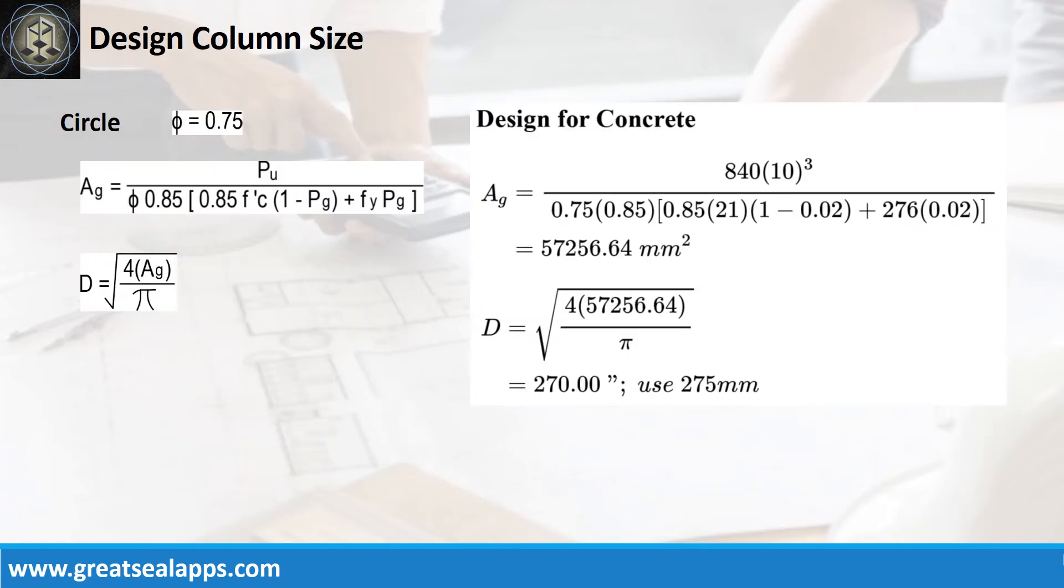Given factored actual load equals 840 kN and steel ratio equals 2%, the gross area of section is 57,256.64 square millimeters for a column diameter of 275 millimeters.